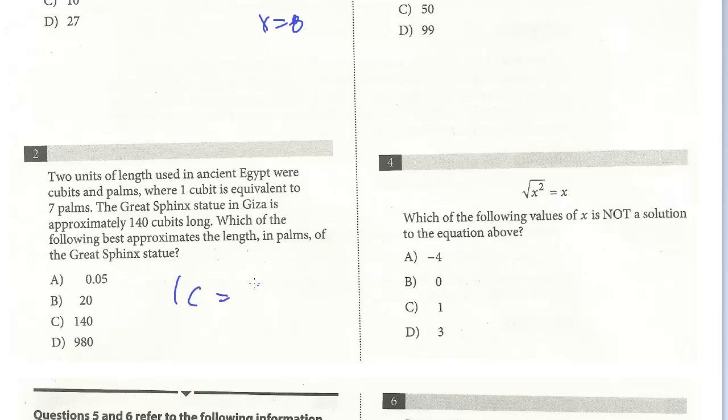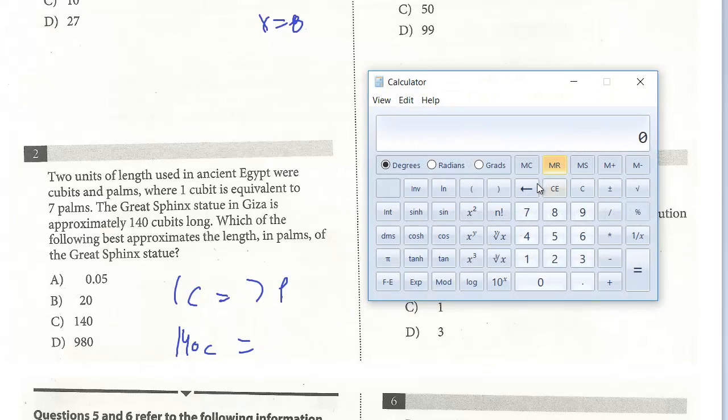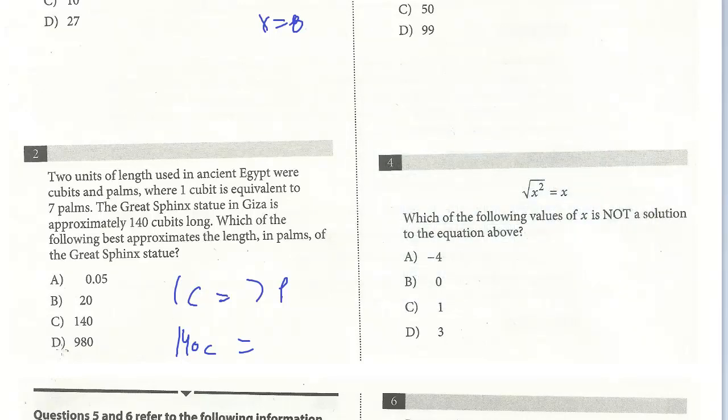One cubit equals seven palms. The Great Sphinx is 140 cubits, so we would just multiply 140 by 7. It's the calculator-permitted section, so let's just do that now. That would be equivalent to 980 palms, answer D.